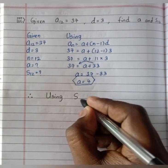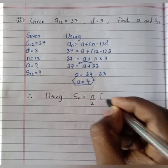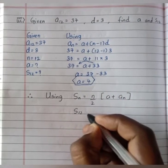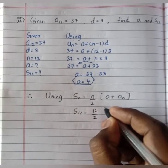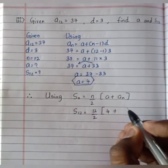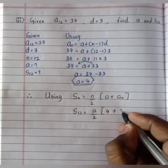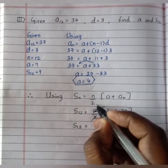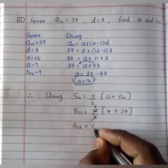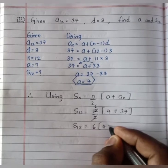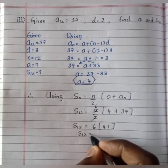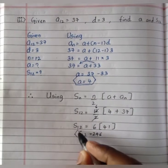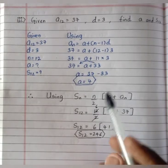Using the Sn formula Sn equals n divided by 2 into a plus an: S12 equals 12 divided by 2 into 4 plus 37. That is 6 times 41, giving S12 equals 246. The sum of 12 terms is 246.